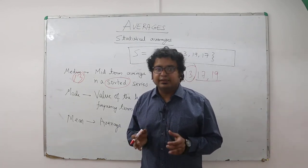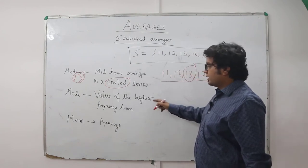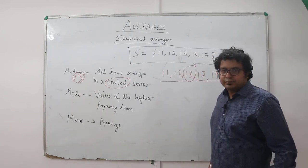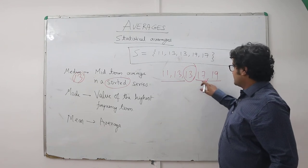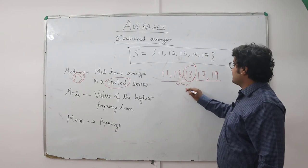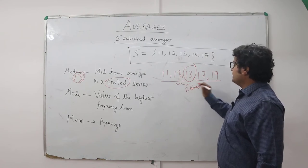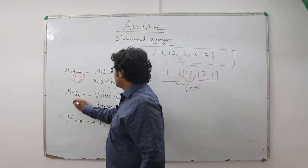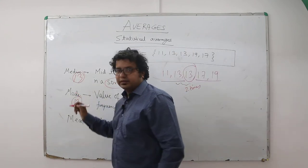Next one: mode. Mode is the value of the highest frequency term. Which term is occurring for the most number of times? Again, it is 13. 13 comes two times; all the other terms come only once. So the mode—the value of the highest frequency term—again is 13.